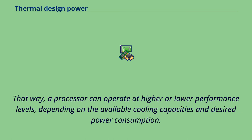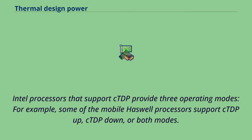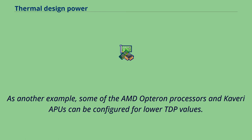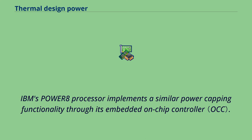That way, a processor can operate at higher or lower performance levels, depending on the available cooling capacities and desired power consumption. Intel processors that support CTDP provide three operating modes; for example, some of the mobile Haswell processors support CTDP up, CTDP down, or both modes. Some of the AMD Opteron processors and Kaveri APUs can be configured for lower TDP values. IBM's PowerAid processor implements a similar power capping functionality through its embedded on-chip controller.